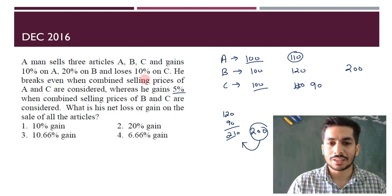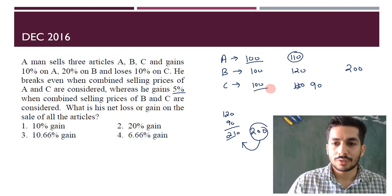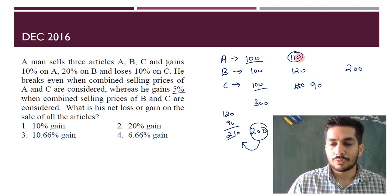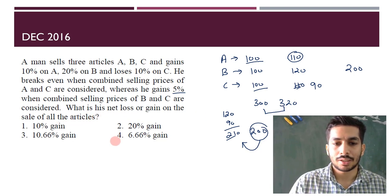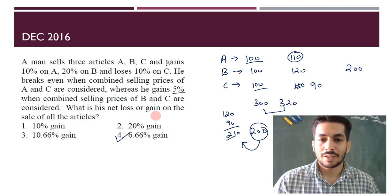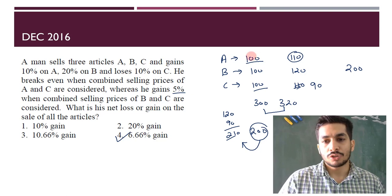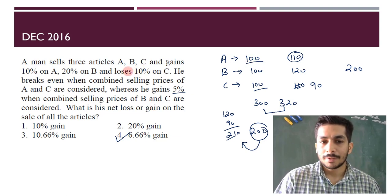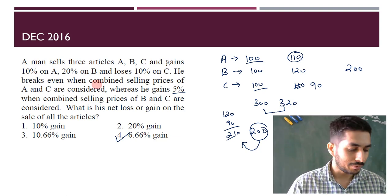Taking all three values as 100, both equations are satisfied. Now what is the net loss or gain on the sale of all articles? Total cost is 300 rupees, and the total selling price is 110 + 120 + 90 = 320. So there is a gain, and 20/300 is approximately 6.67% — so the correct answer is option number four. You just used random values rather than plugging in options directly, making equations easier to interpret. Both questions can be solved in under one minute.